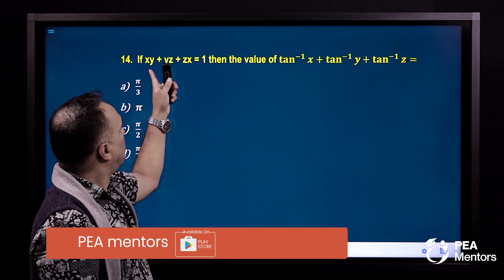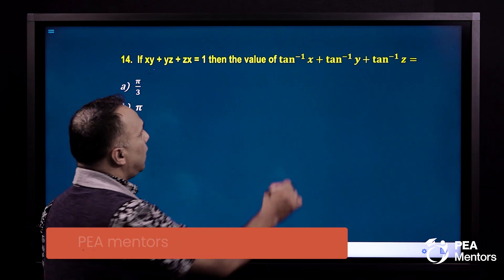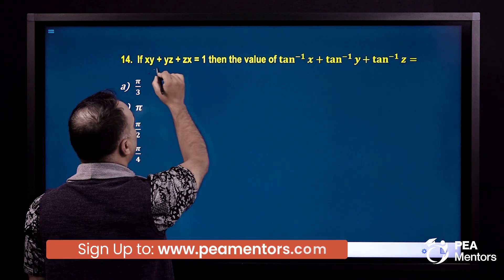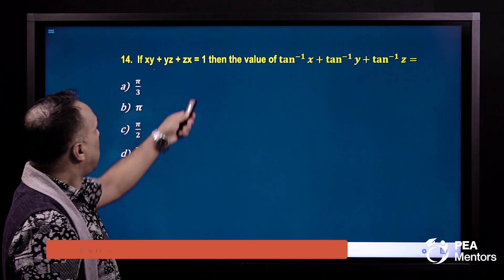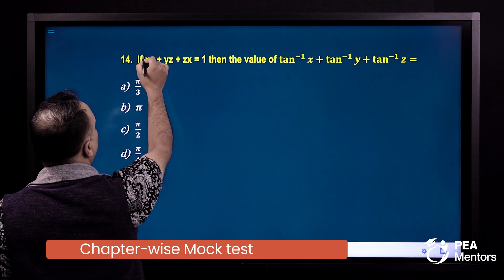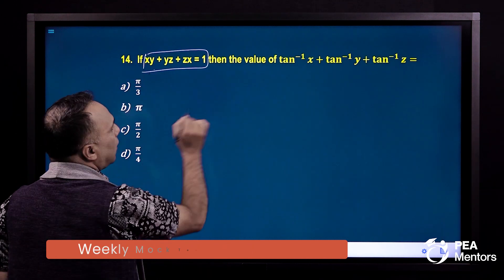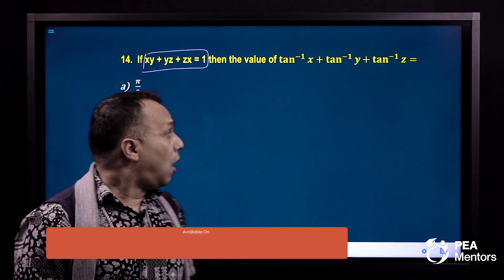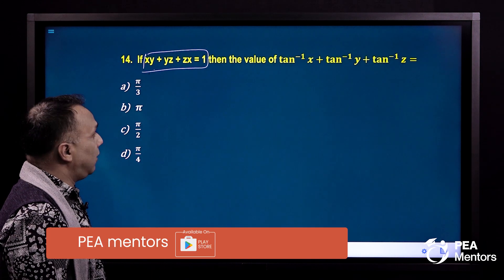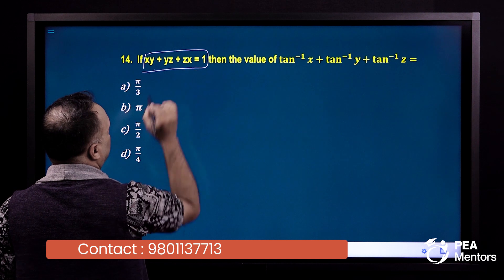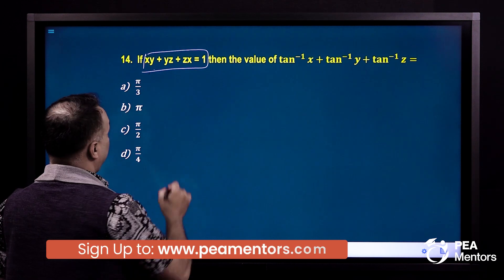Sometimes, if you take this one, the value of tan inverse x plus tan inverse y plus tan inverse z equals pi by 2. Now, if you take this one, you will remember the exam. xy plus yz plus zx equals to pi by 2.